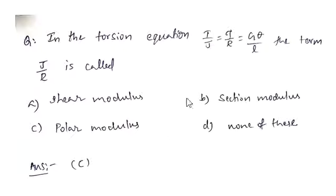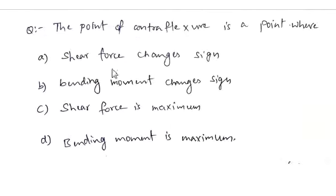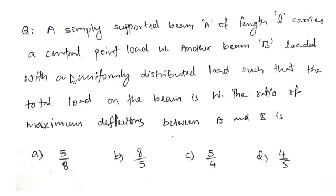The point of contraflexure is a point where: option A shear force changes sign, option B bending moment changes sign, option C shear force is maximum, option D bending moment is maximum. The point of contraflexure is the point where the bending moment changes sign. Option B is the right answer.